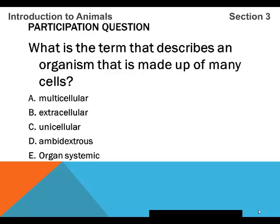Second participation question. What is the term that describes an organism that is made up of many cells? A, multicellular. B, extracellular. C, unicellular. D, ambidextrous. E, organ systemic.